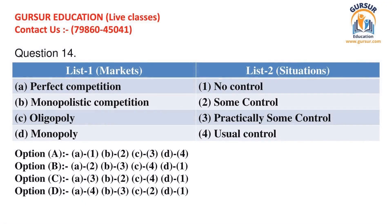Question number 14. Two lists are given. Match correct items of list 1 with list 2. List 1 (Markets): A. Perfect Competition, B. Monopolistic Competition, C. Oligopoly, D. Monopoly. List 2 (Situations): 1. No Control, 2. Some Control, 3. Practically Some Control, 4. Usual Control. Below are given the options with different matches. You can pause the video and choose the appropriate answer. The right answer is Option A. We suggest you to pause the video to analyze and learn the correct combination.